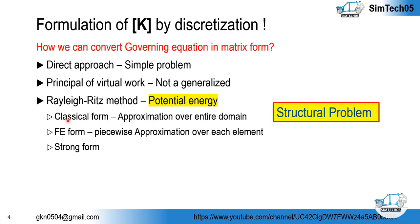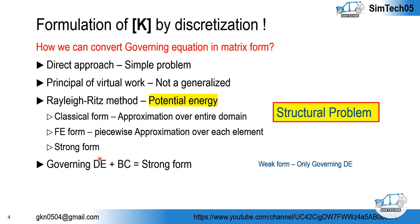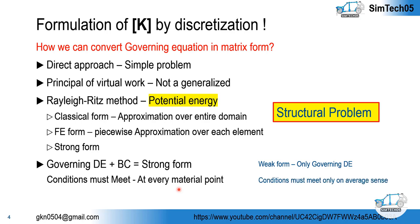The related method has two forms: the classical form and the FI form. The Rayleigh-Ritz method is a strong form. You may have heard about strong form and weak form. The strong form has differential equations plus boundary conditions for the functional. The weak form has only the differential equation for the functional. In the strong form, conditions are met at every point within the solution space — at every material point. In the weak form, these conditions need to be met only in an average sense.